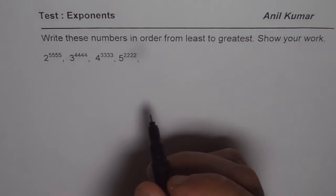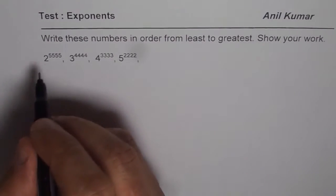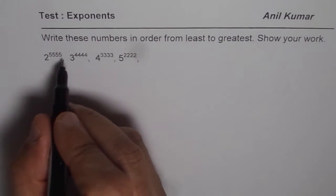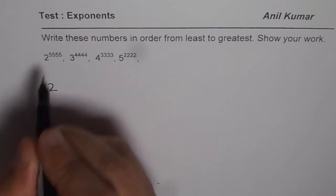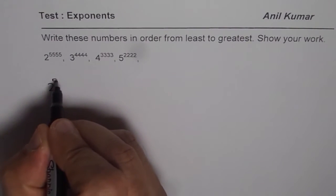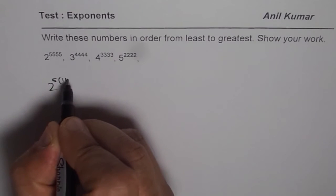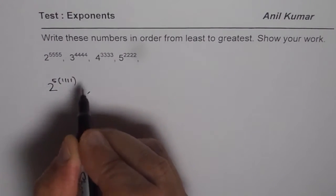Now, what you can do is, you can write 2 to the power of 5555 as 2 to the power of, if I take 5 common, right, then what it becomes? 1111, you get the idea, right?